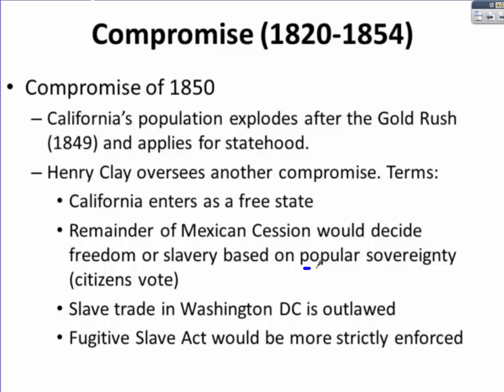Popular sovereignty is a very important term — it simply means that the citizens vote on the future of an issue, in this case slavery. The slave trade in Washington, D.C. would be outlawed, and the Fugitive Slave Act would be more strictly enforced.